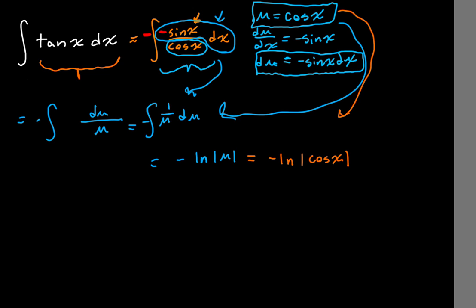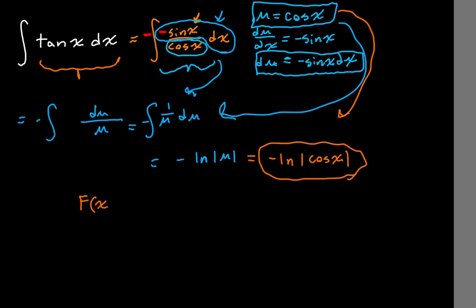We can verify this by taking the derivative of this function. Let capital F of x equal negative natural log of the absolute value of cosine of x. To find the derivative, we're going to use the chain rule. It's a little bit worrisome because we've got that absolute value in there, but as you'll see, it's actually not going to matter at all.